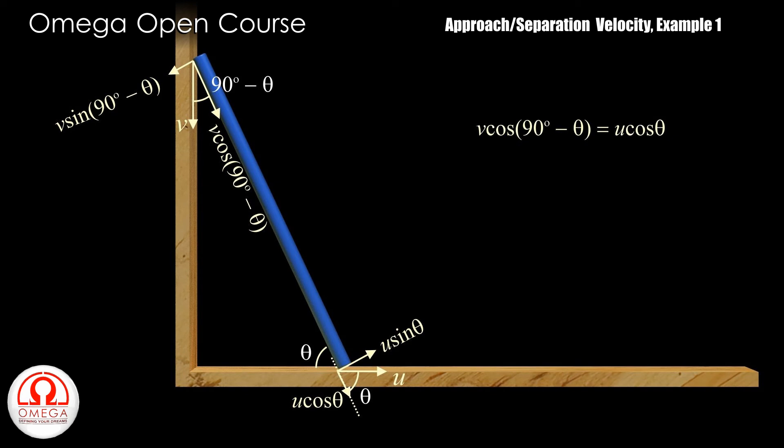Or v cos 90 degree minus theta must be equal to u cos theta. Cos of 90 degree minus theta is sin theta. Therefore, v sin theta must be equal to u cos theta or v is equal to u cot theta. This is our answer.